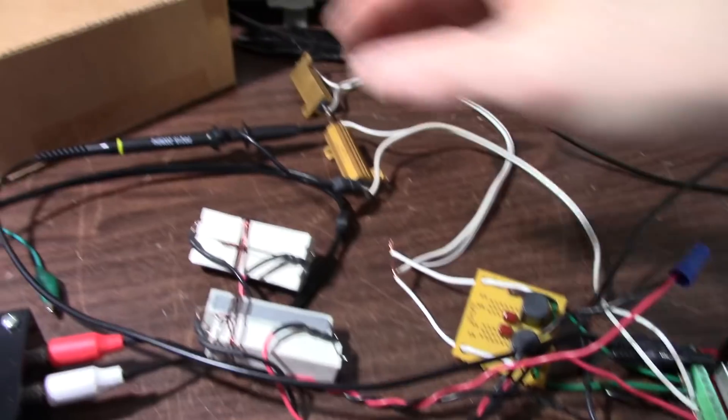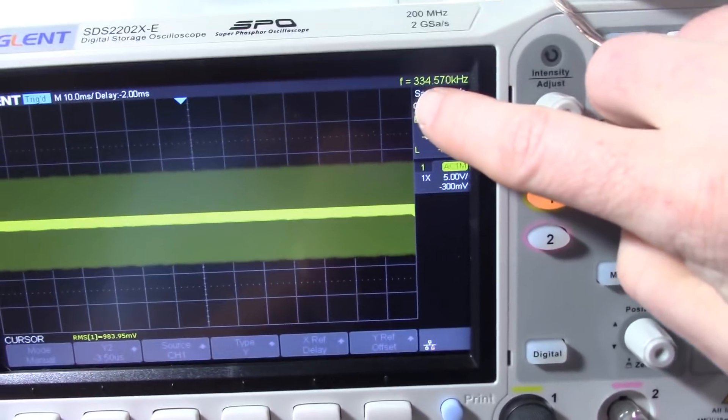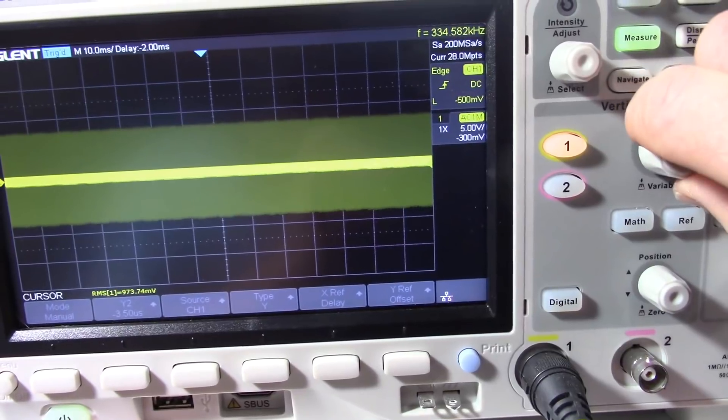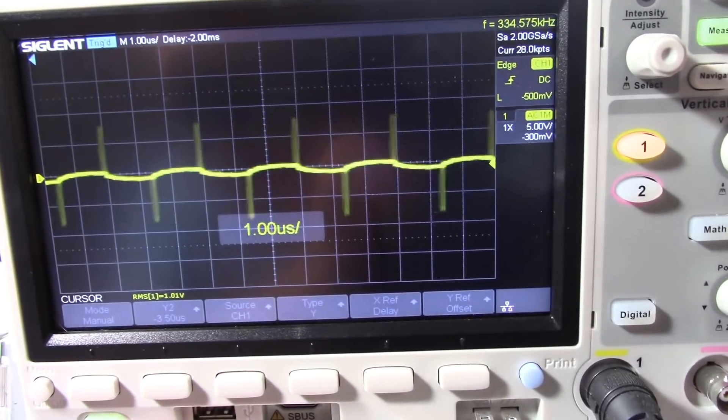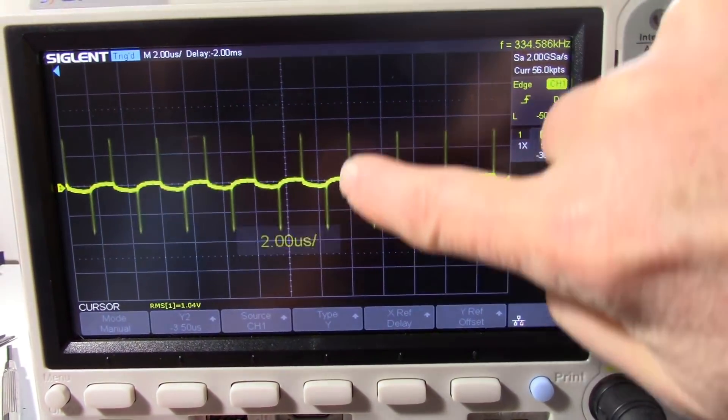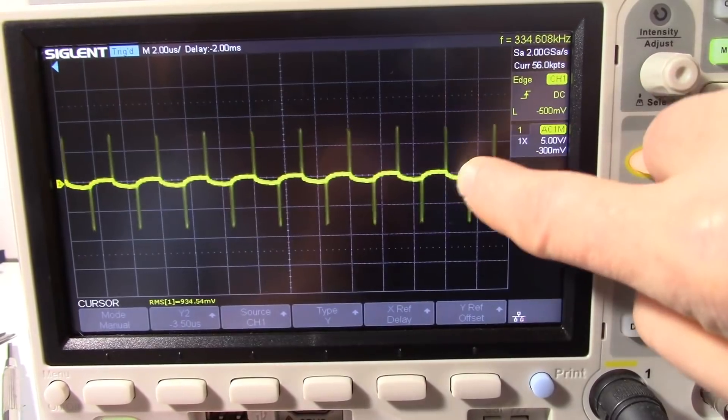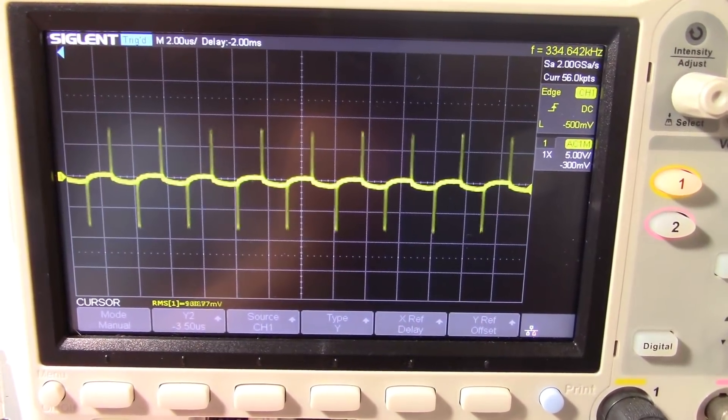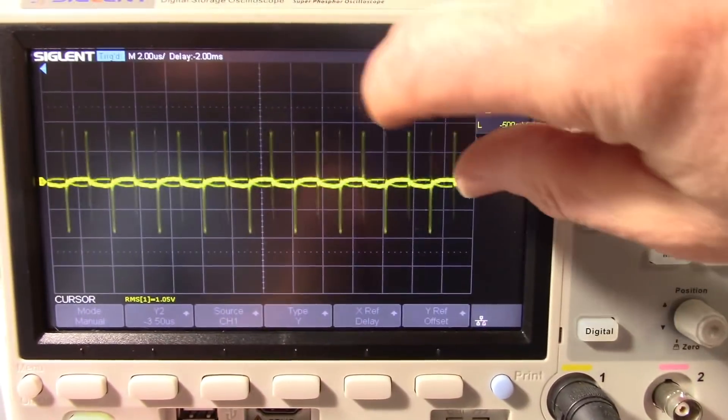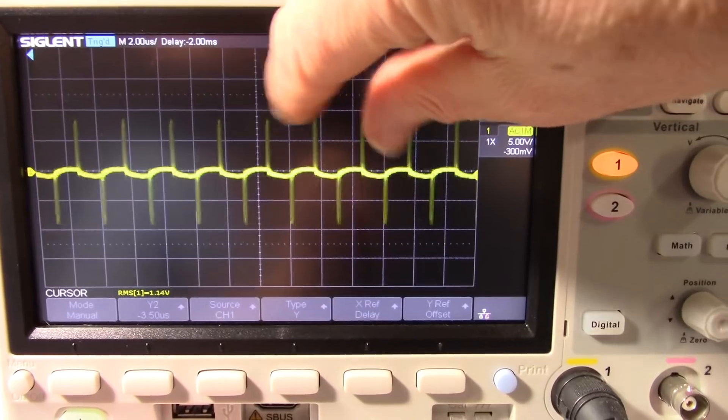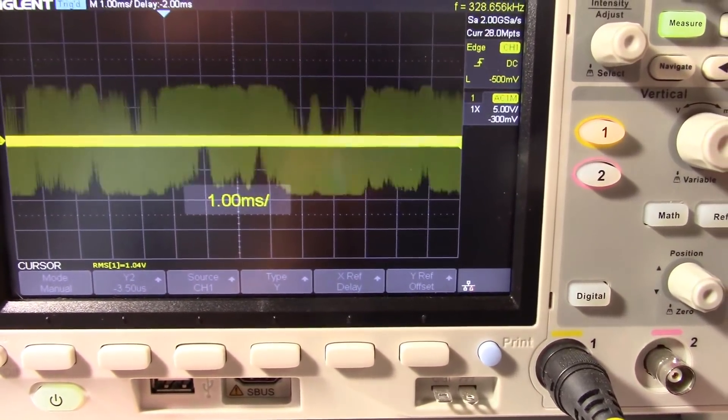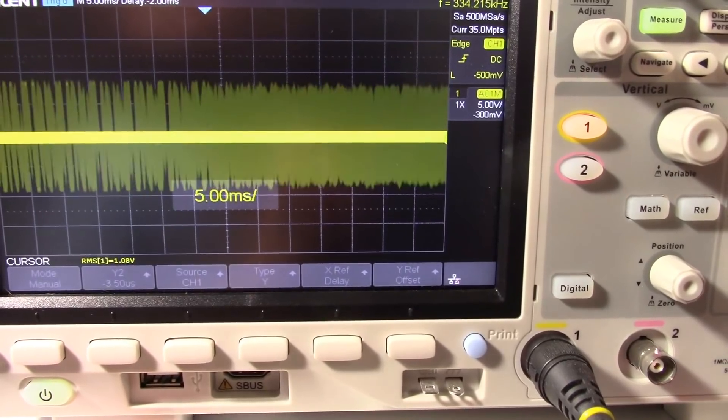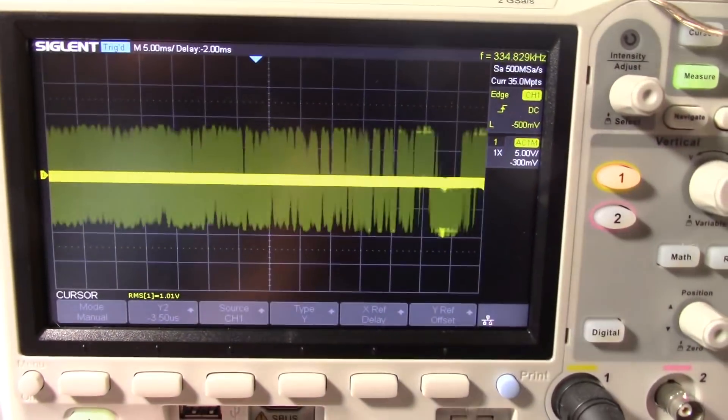If I zoom in you can see the switching frequency there, about 334 kilohertz. There's very high crest factor pulses because it's sitting idle with no music playing. When I play music, it actually changes the duty cycle of that pulse. I need to see a sine wave to calculate the power.